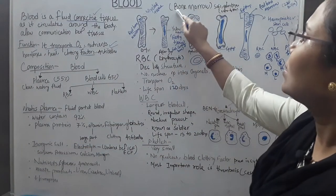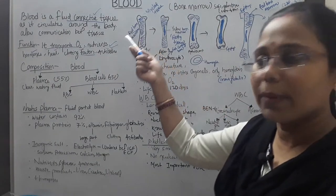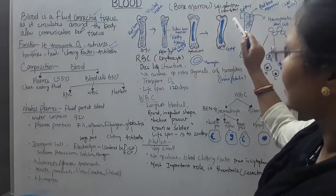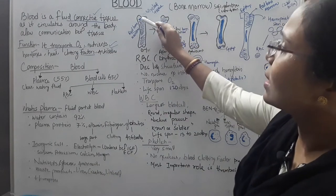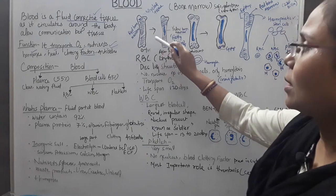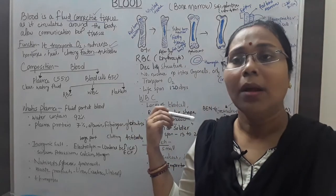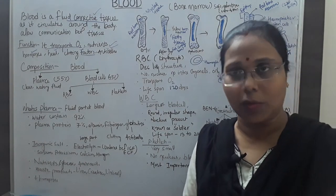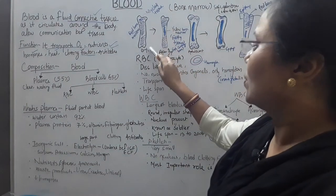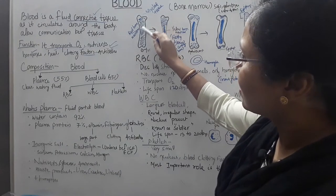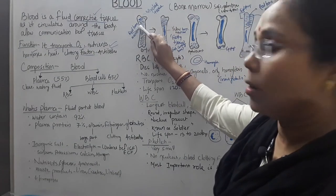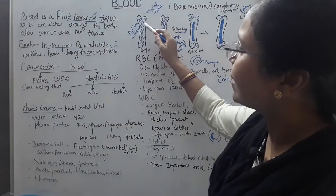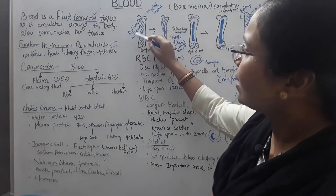The formation of blood cells occurs in the bone marrow. The bone marrow is a soft, gelatinous substance present in the center of bones — particularly bones present in the arm, hip, and legs. In the zero-to-one-year stage, the bone marrow is filled with red bone marrow.